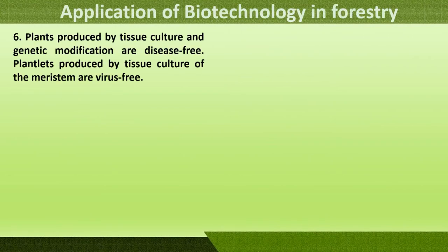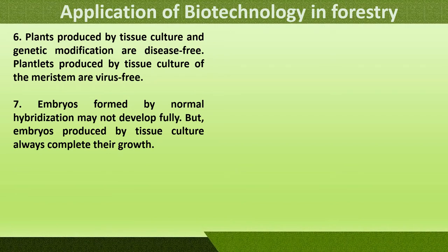Plants produced by tissue culture and genetic modification are disease-free. Plantlets produced by tissue culture of the meristem are virus-free. Embryos formed by normal hybridization may not develop fully, but embryos produced by tissue culture always complete their growth. So if we want a plant with qualities of two different plants, tissue culture ensures we get whichever qualities we want and the plant will also develop fully — making tissue culture much better than normal growth.